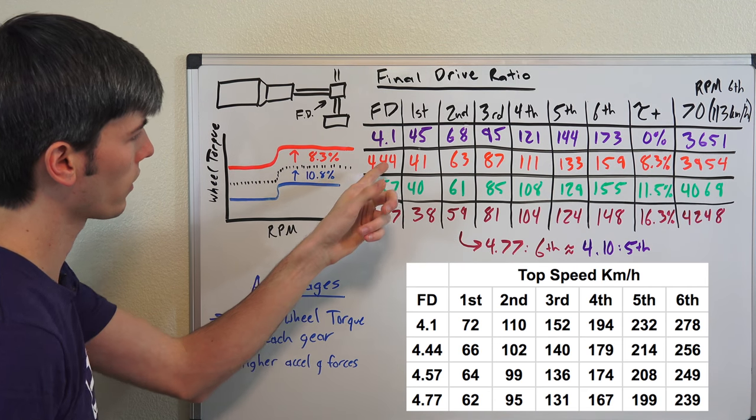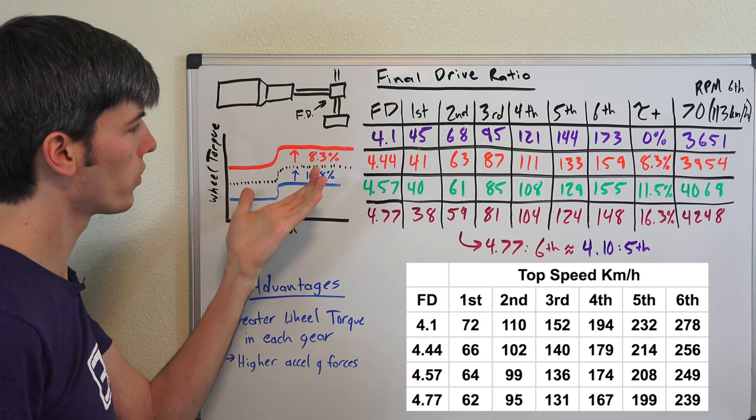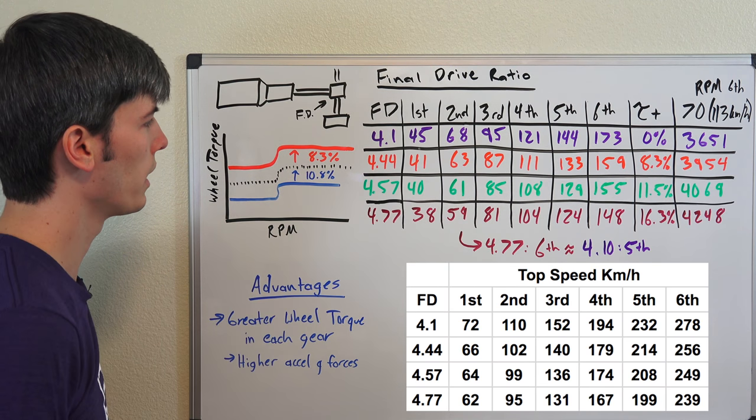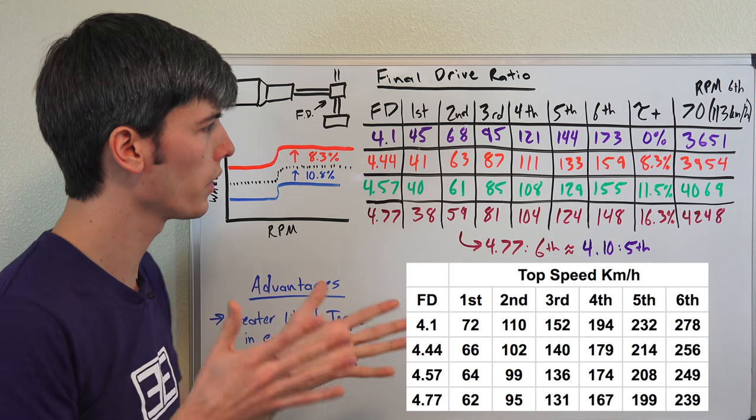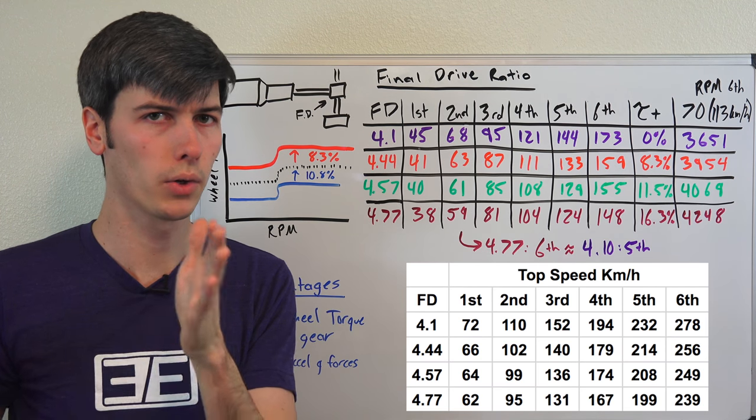by 8.3%. That's the 4.44 divided by 4.1. What you sacrifice is that top speed.